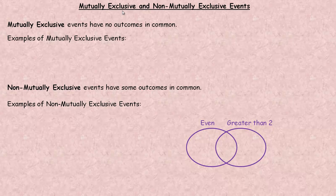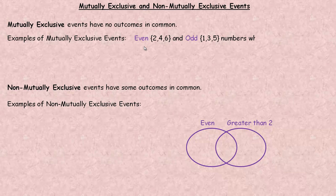In this tutorial, we'll take a look at mutually exclusive and non-mutually exclusive events and calculating probabilities for both of these. Mutually exclusive events have no outcomes in common. For example, if you're rolling a normal six-sided die, one event is to get an even number — 2, 4, or 6 — and another event is to get an odd number — 1, 3, or 5. There are no values that are both even and odd, so those are mutually exclusive events. They don't have anything in common whatsoever.